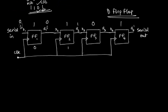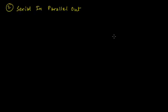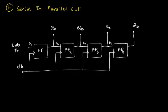Next up we have the other type of register: the serial in parallel out shift register. For this type of register, the data is input serially — one bit after the other — just like in the previous example.